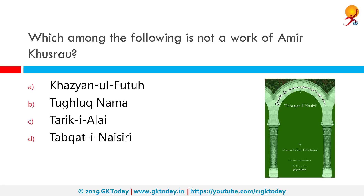Which among the following is not a work of Amir Khusrau? The correct answer is Tabaqat-i-Nasiri. This work is named after Sultan Nasiruddin and is an elaborate history of the Islamic world, written in Persian by Minhaj Siraj Juzjani and completed in 1260 AD.